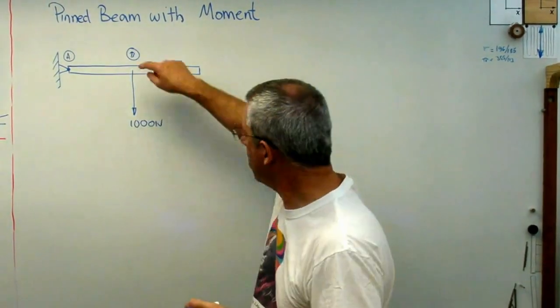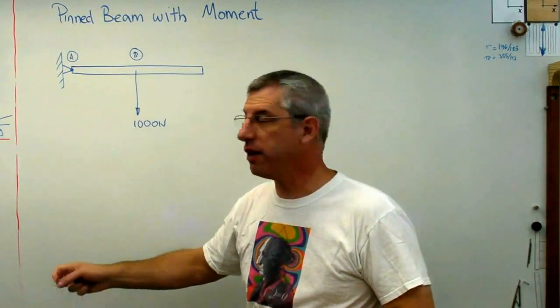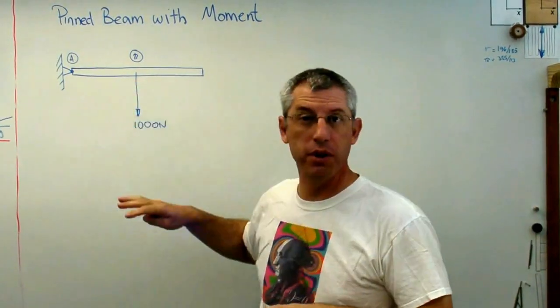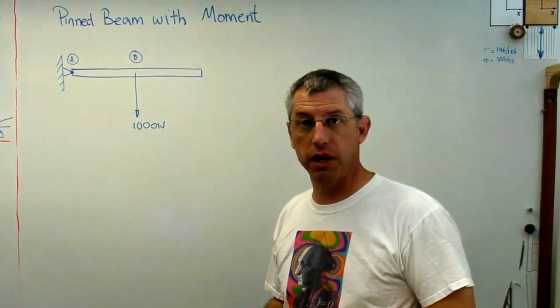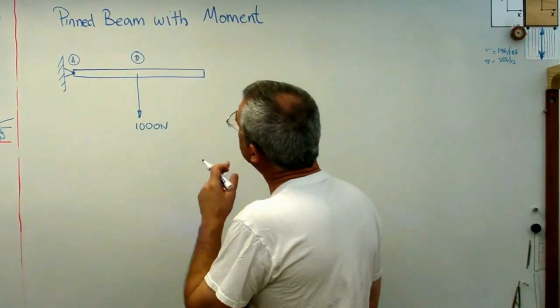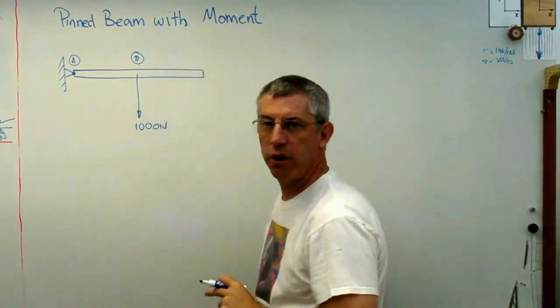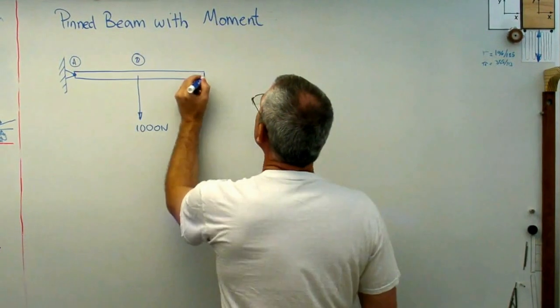Right now, obviously this beam is going to fall, right? The forces and moments are not balanced, so there's going to be an acceleration. The obvious thing to do is to put a force up on the other end, but what if we don't do that?